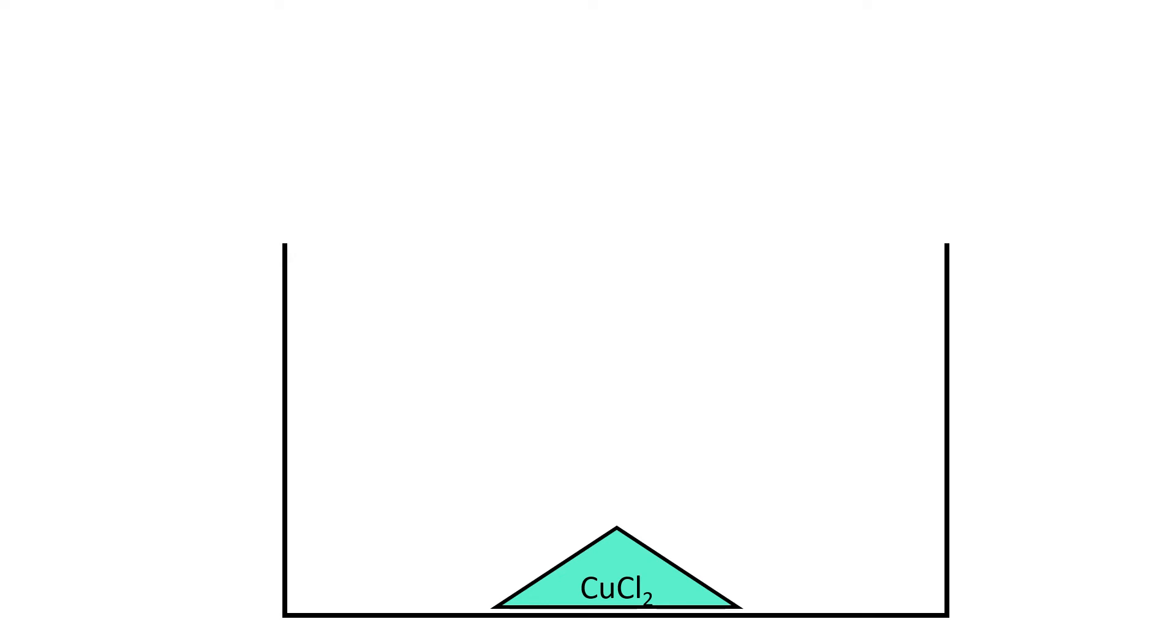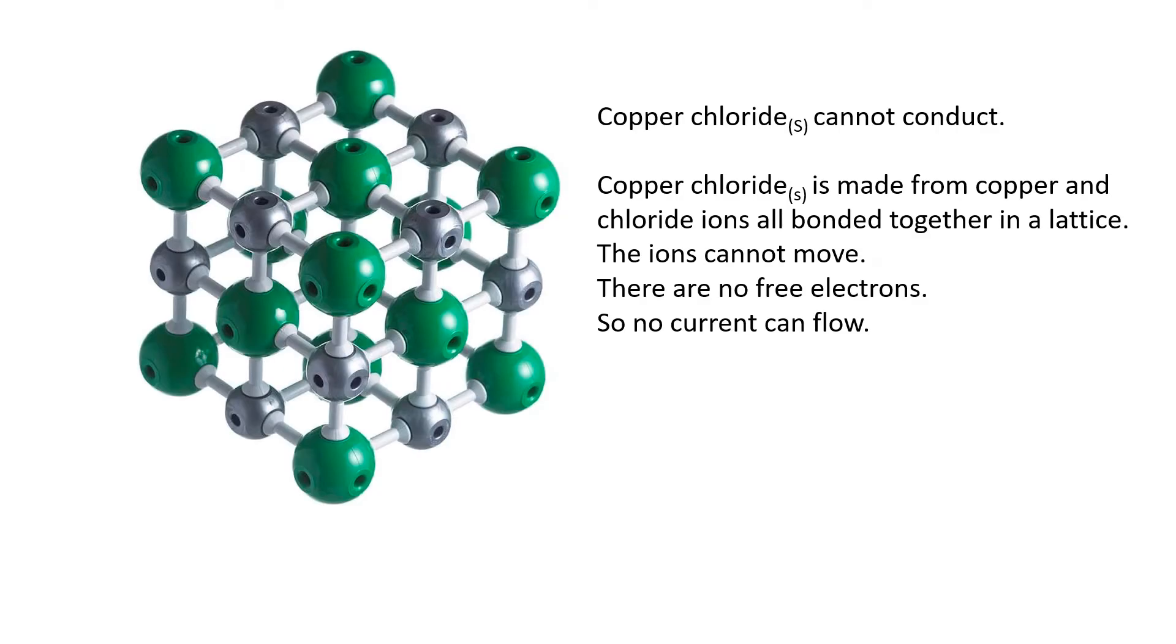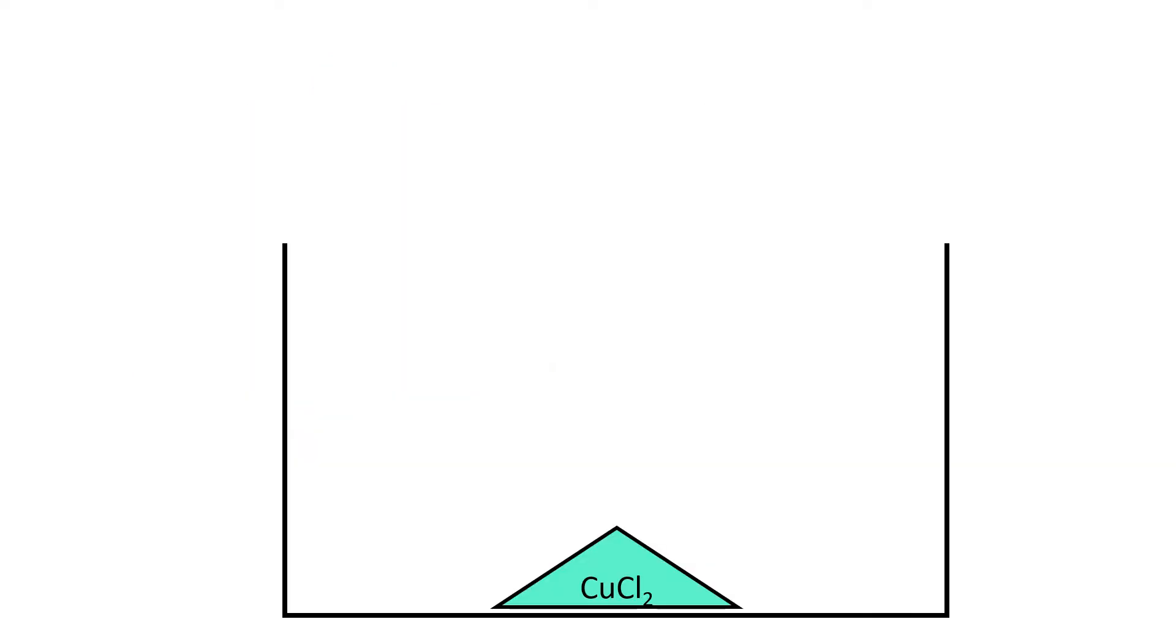I would like to talk you through some of the key points on the GCSE regarding electrolysis. It is a much misunderstood part of the curriculum. Let's have a look at a reasonably simple one. This one is copper chloride, and copper chloride is an ionic substance and it does not conduct when it's solid. It does not conduct. The reason being it's all stuck together in a lattice. That's a lattice - nothing can move. Everything is stuck there. There's no free electrons. All the ions are stuck together in a lattice so there's nothing there that can move. No current can flow.